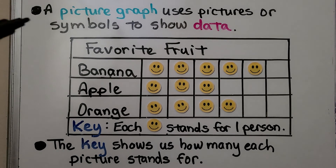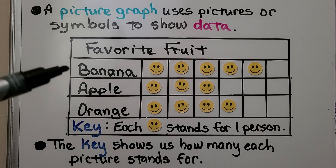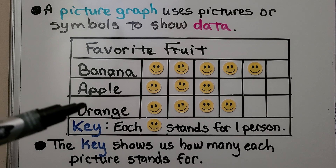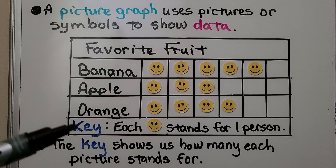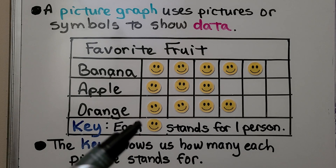This picture graph has the title 'Favorite Fruit.' We can see the choices are banana, apple, and orange. The key tells us that each smile face stands for one person.